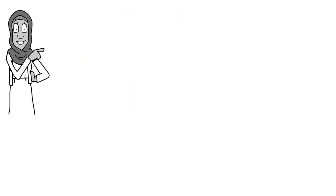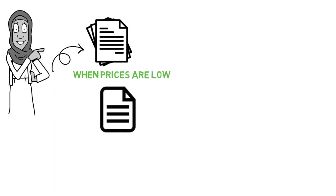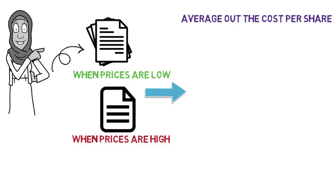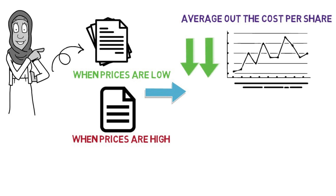Over the course of the year, Sarah ends up buying more shares when prices are low and fewer shares when prices are high. This helps her to average out the cost per share over time and potentially reduce the impact of market volatility.